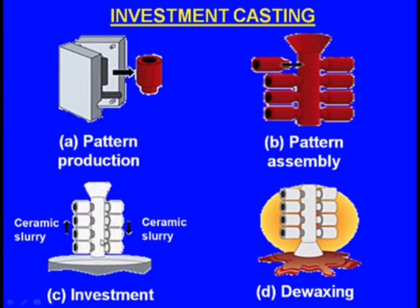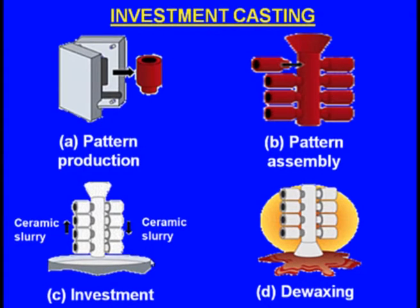The next step is preparing a thick ceramic slurry and applying a ceramic slurry coating. The assembly is dipped into the ceramic slurry, taken out, and stucco is sprinkled around it, then dried. Again it is dipped into the ceramic slurry, stucco is applied, and it is dried. This cycle of dipping, applying stucco, and drying is done 7 to 8 times, after which there is a thick shell around the wax patterns.